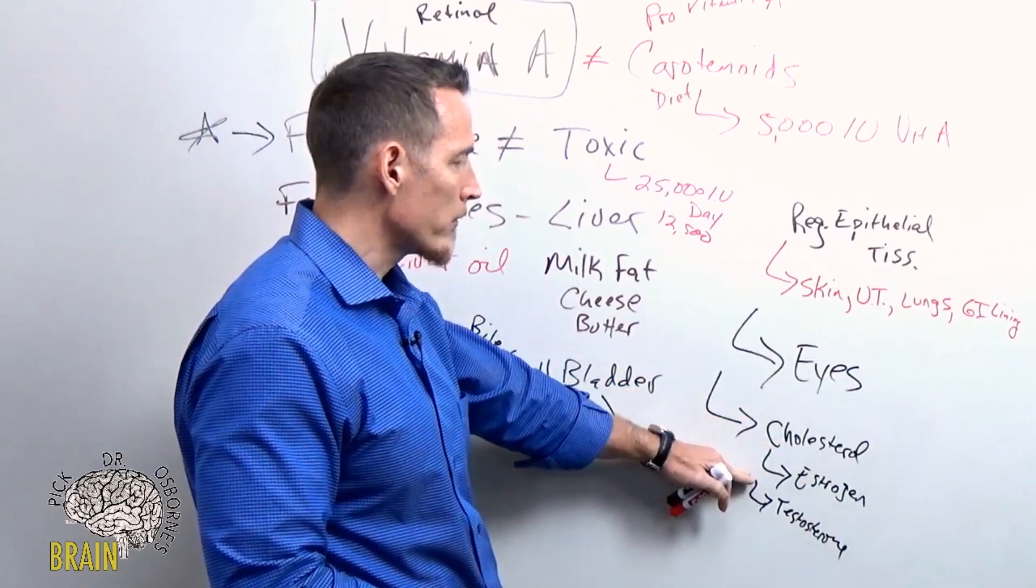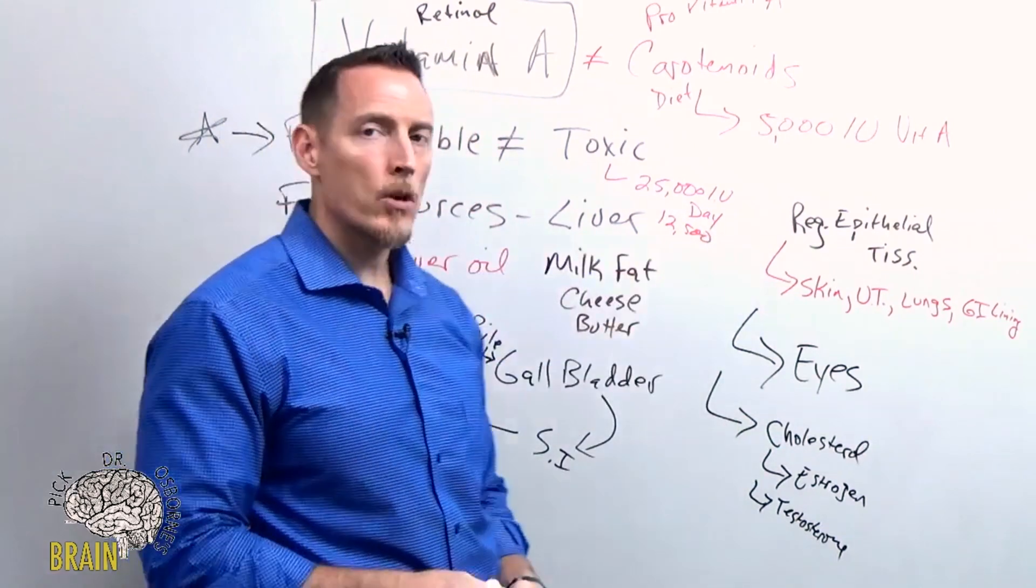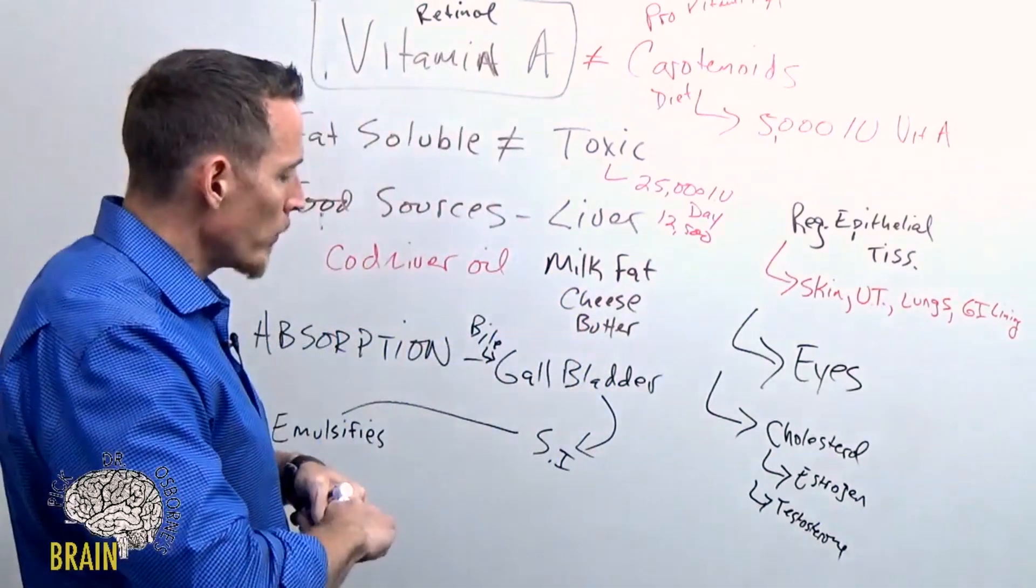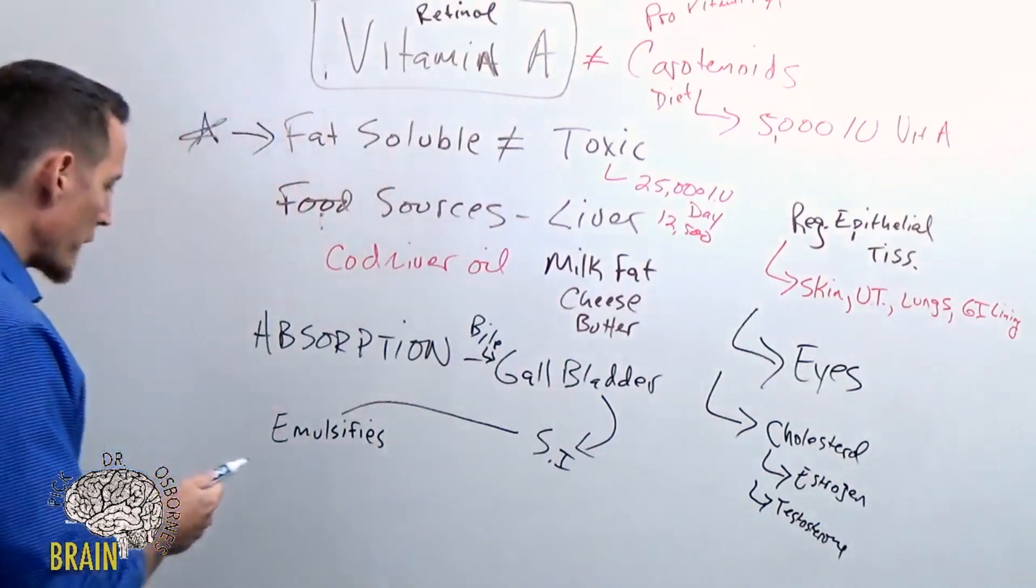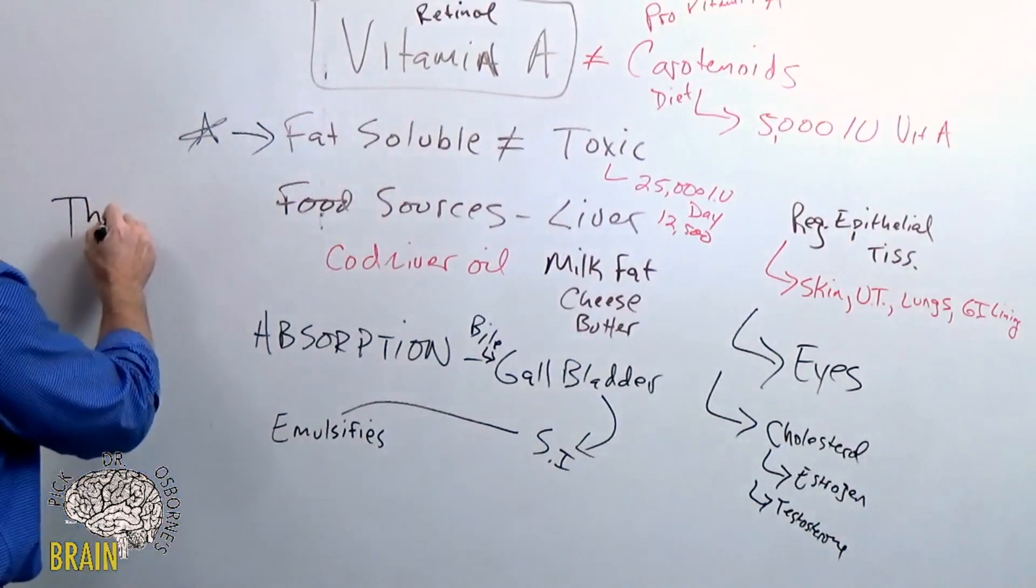We've got another function here: vitamin A is important in sex steroid hormone formation. We said eyes, we said regeneration of epithelial tissue. What are some of the other functions of vitamin A? Arguably one of the biggest functions is thyroid function.